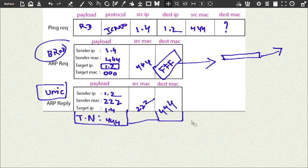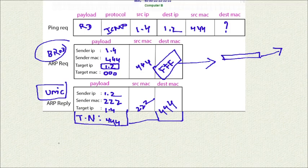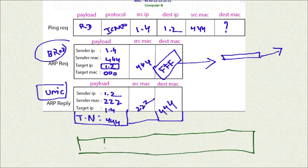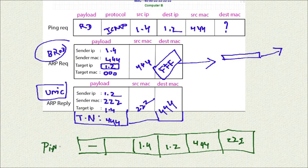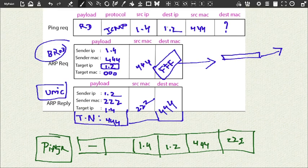This is a simple explanation of ARP request and ARP reply. After getting the reply, the ping packet is sent: random data, ICMP, source IP 1.4, destination IP 1.2, source MAC 444, destination MAC 222. The ping reply will come back. This is the basic concept of ARP.